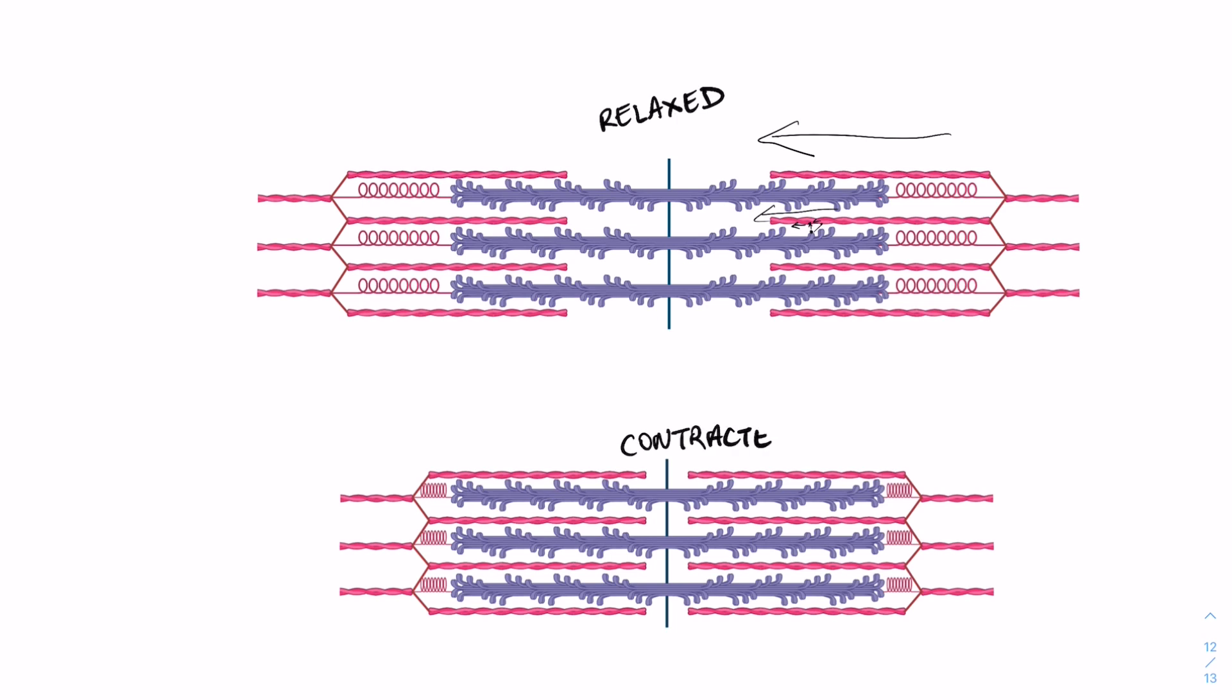I say it, that meaning the thin filament. And so basically through repetitive rounds of cross bridge cycling, we change that sarcomere from the relaxed to the contracted state.